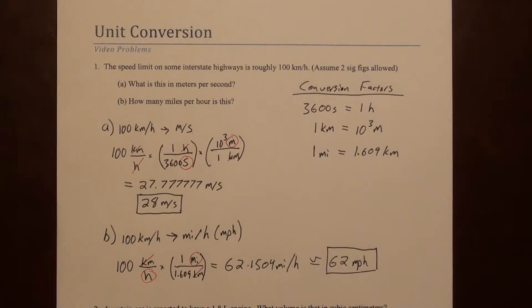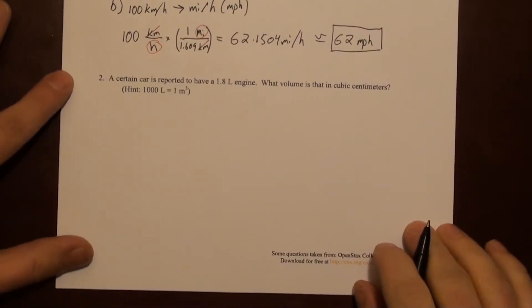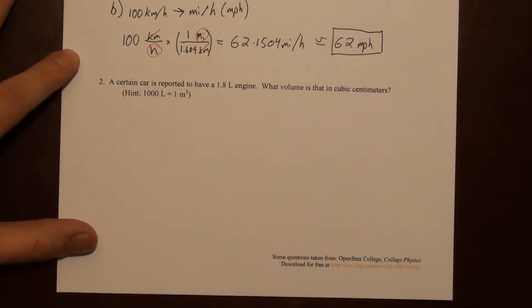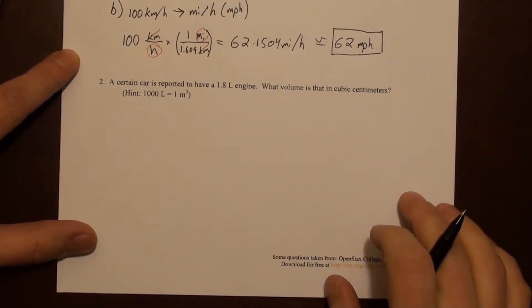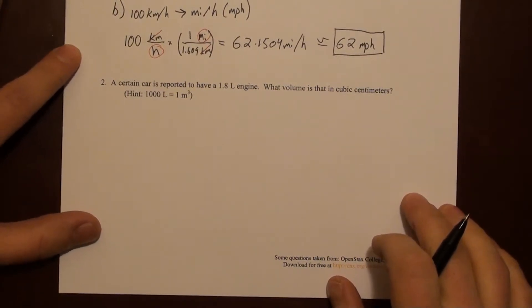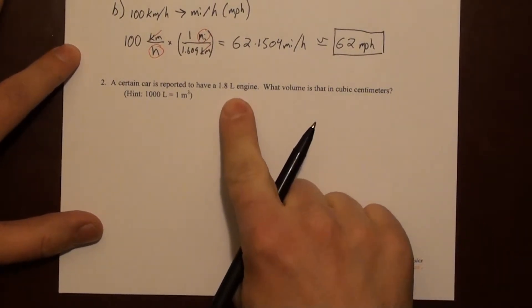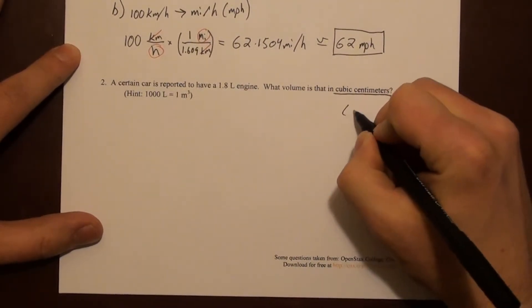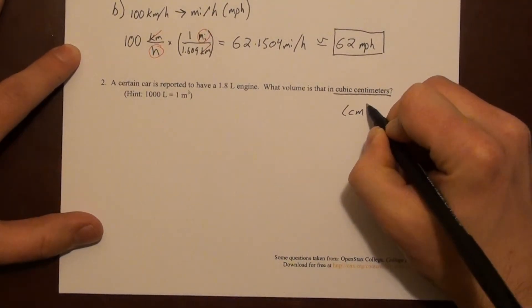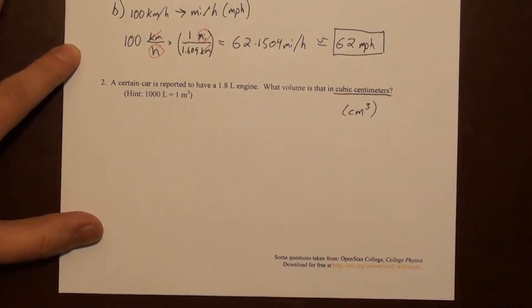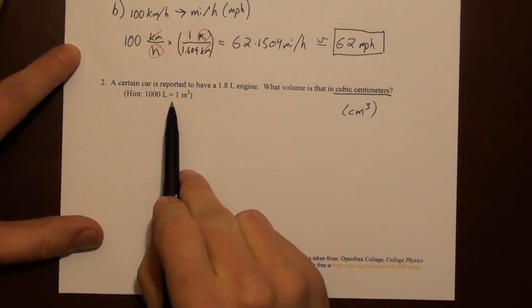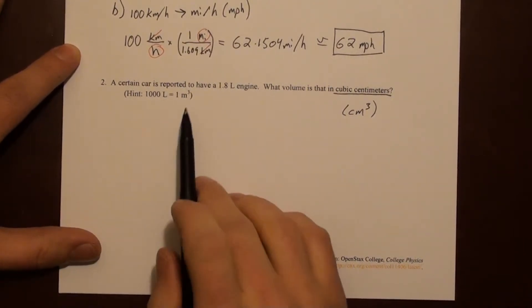So now we can look at question two on this sheet. Question two says a certain car is reported to have a 1.8 liter engine. What volume is that in cubic centimeters? So a liter is a volume, and we're going to cubic centimeters, which is also a volume. So we should think cubic centimeters, that's centimeters cubed. We're also given this handy fact that a thousand liters is one cubic meter. So that gets us halfway there.